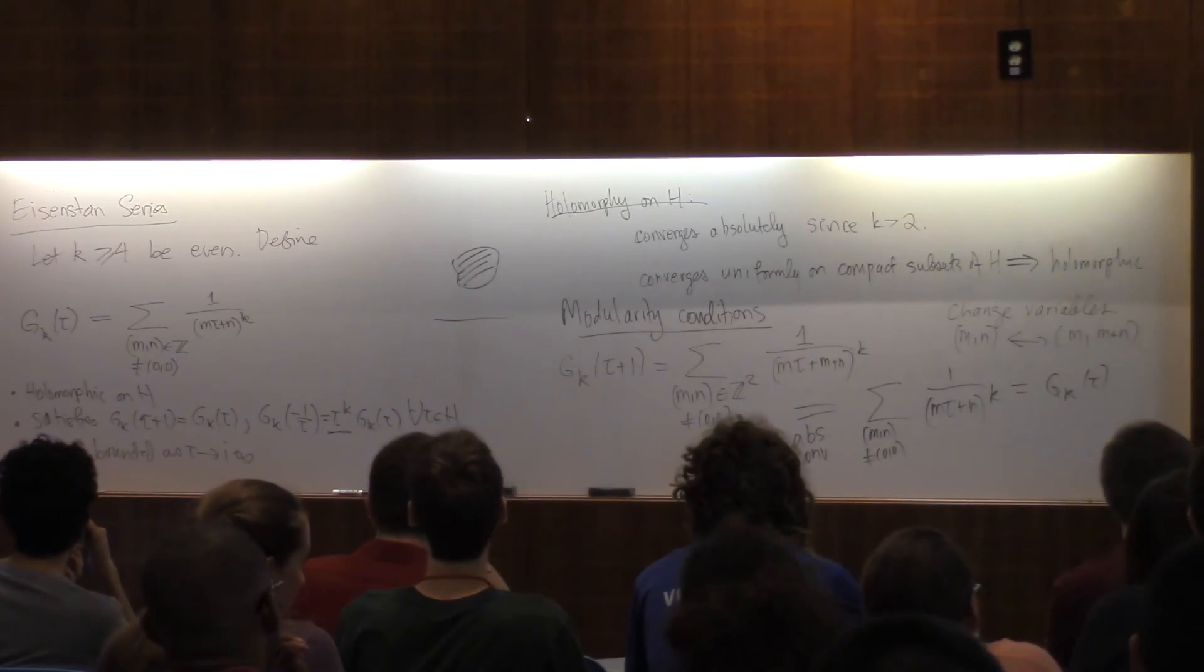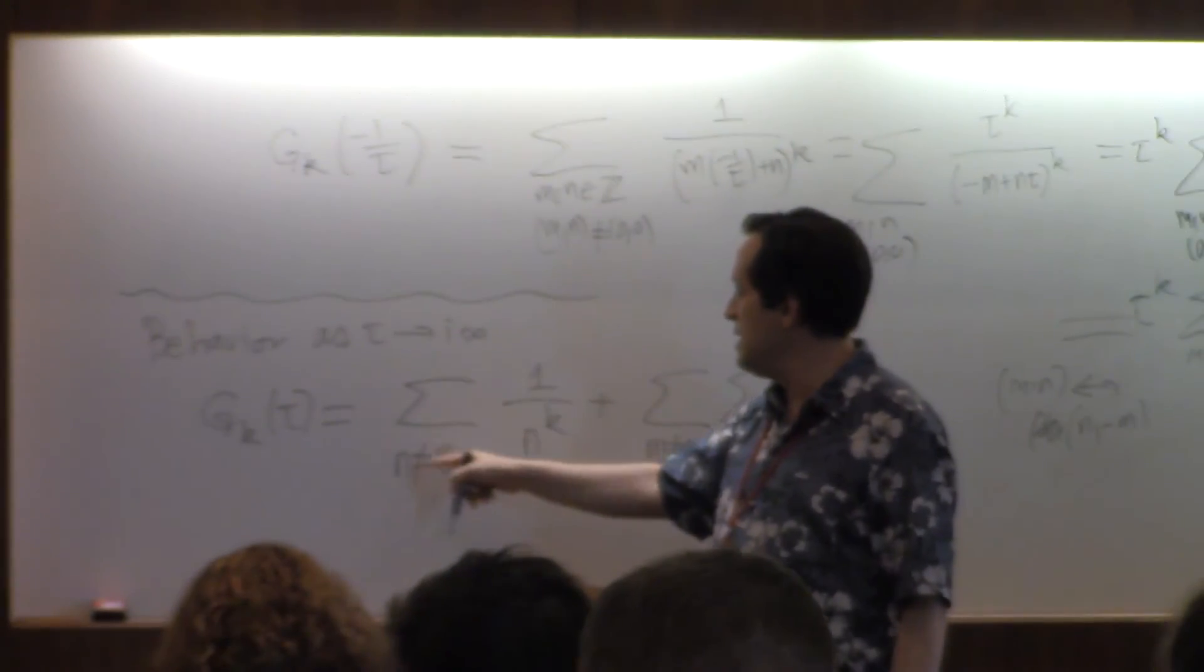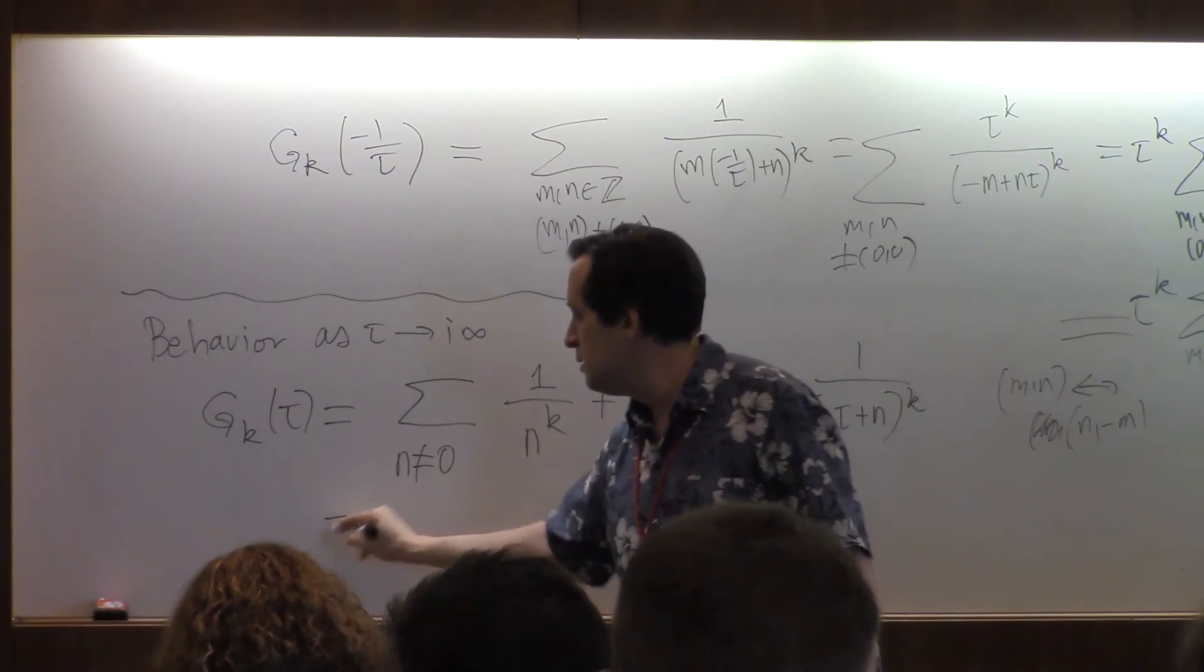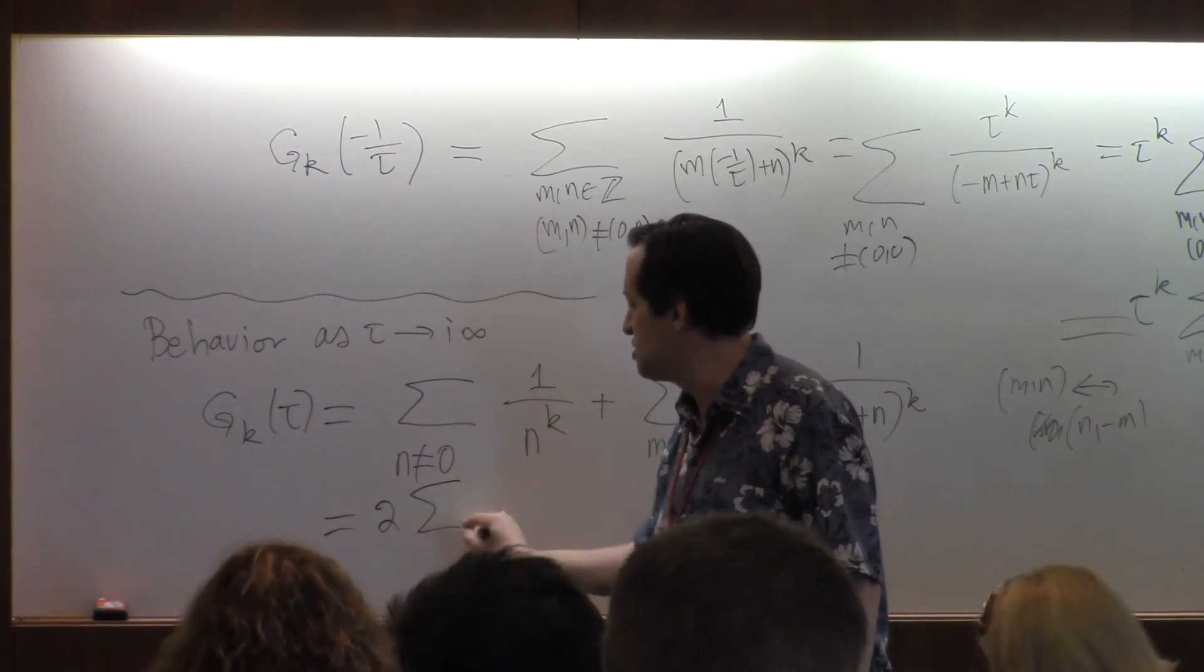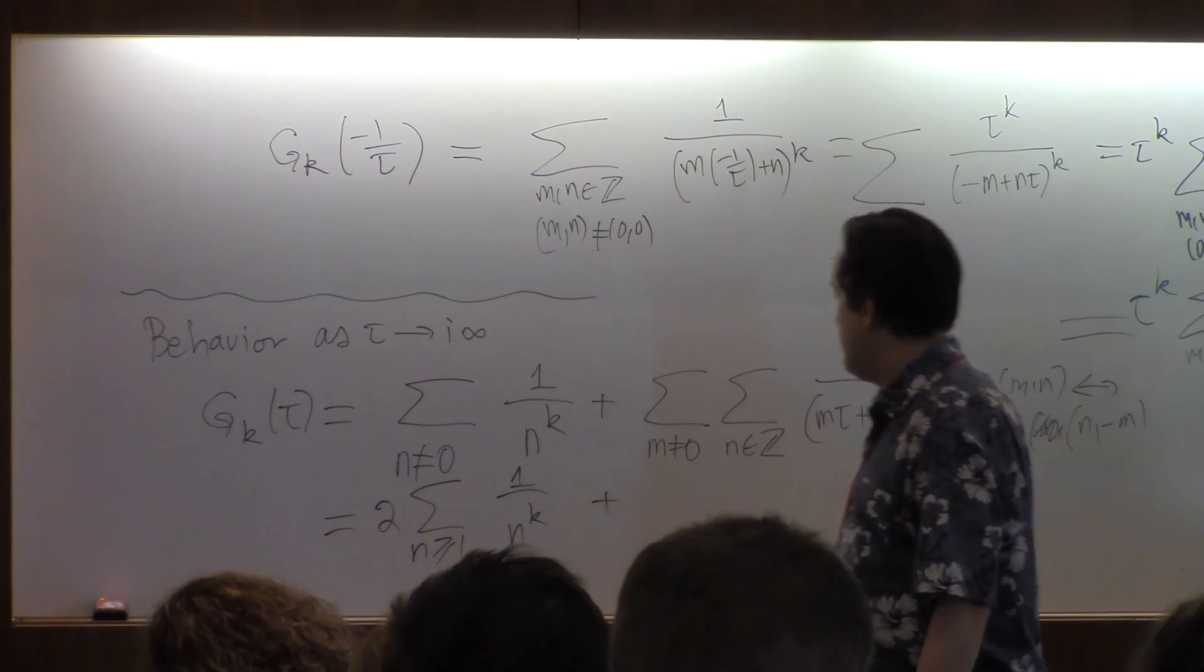But here k is even, and we're going to use that right here. Since k is even, the terms at n, n, minus n are the same, and so I'll write twice the sum n at least 1, 1 over n to the k.